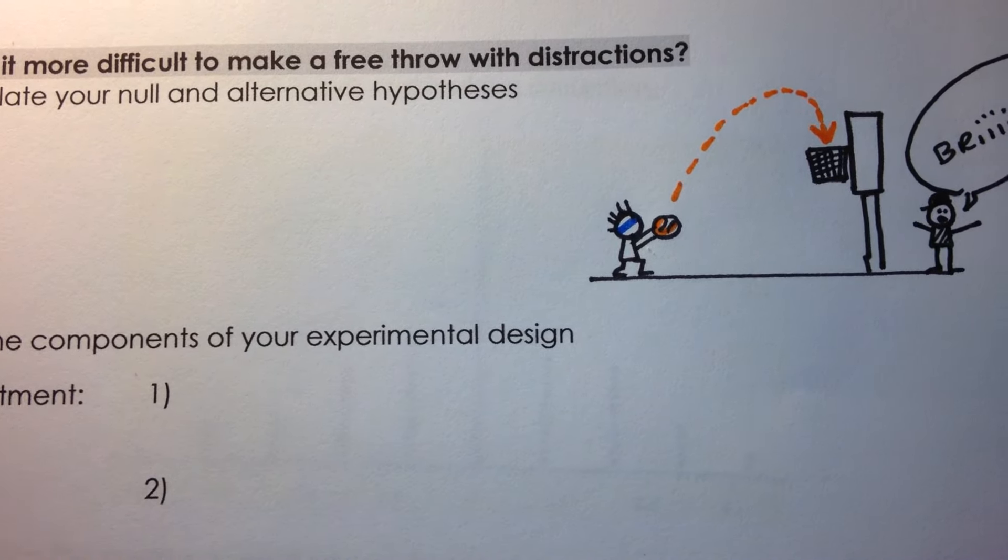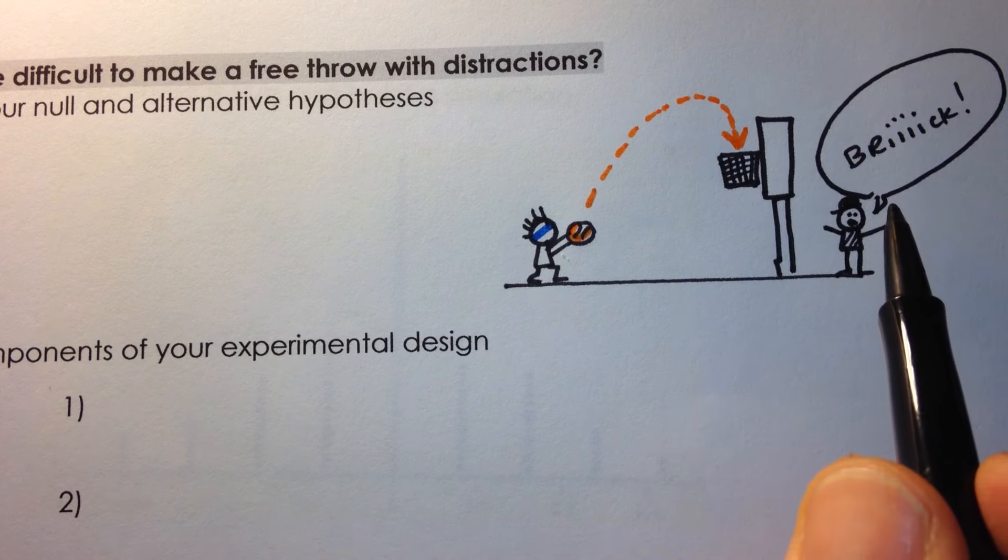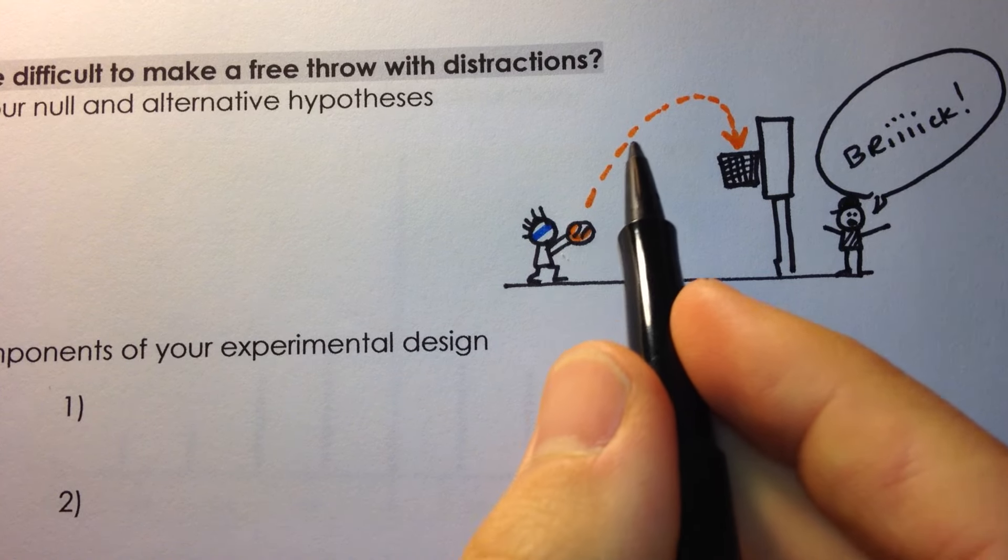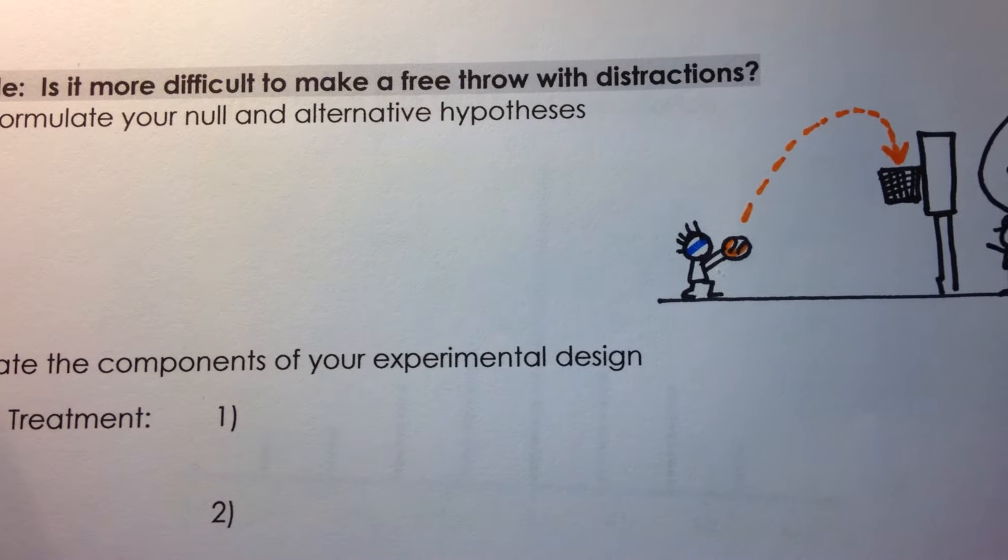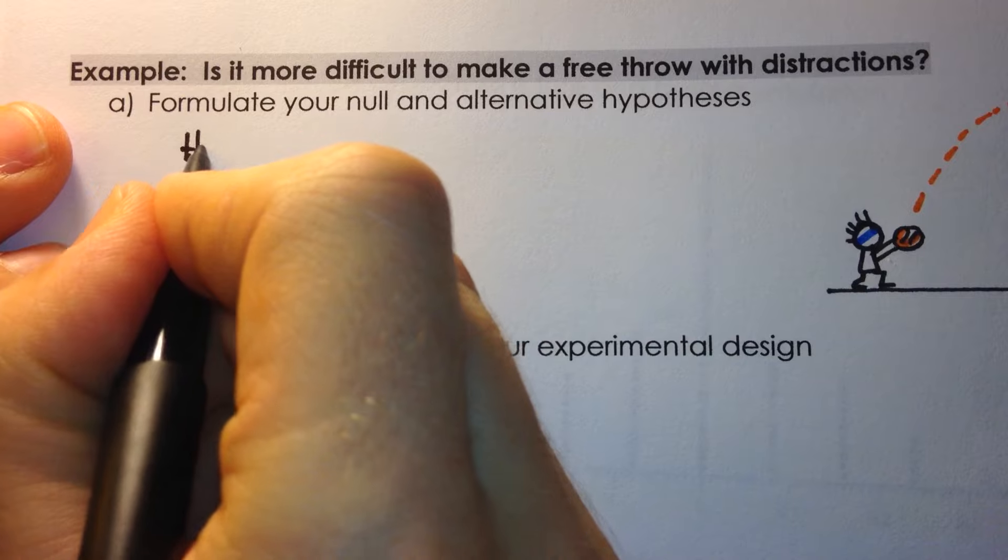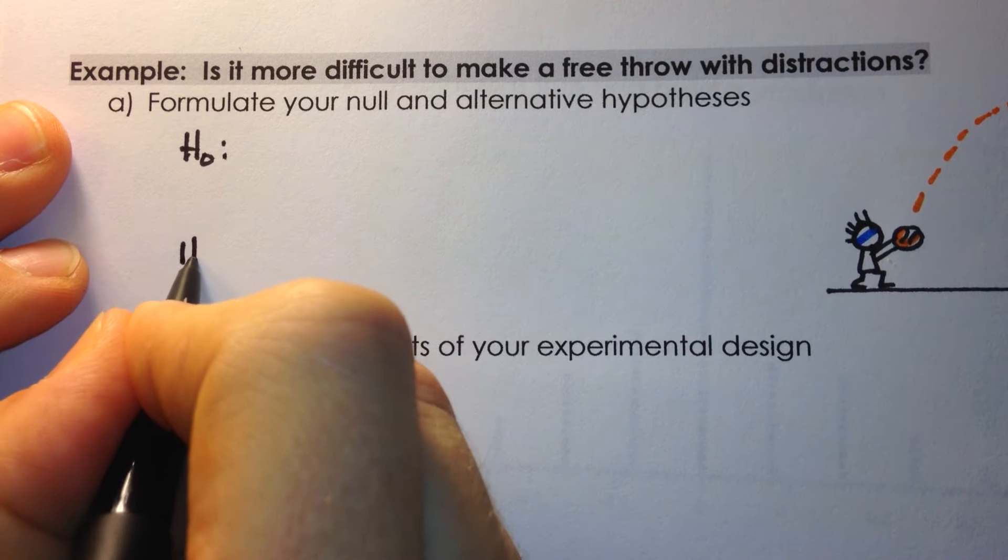And so the question is, does the distraction affect our player's ability to make free throw shots? So let's formulate two hypotheses for this, and then we'll talk about how we run the experiment.